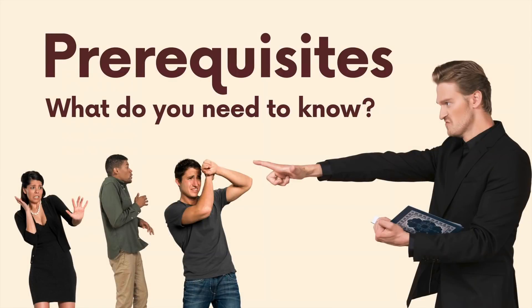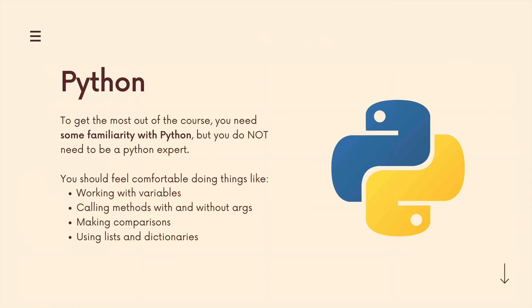I should talk about prerequisites. The good news is you need just a little bit of Python — you do not need to be an expert. 99% of what we do is just working with libraries and methods, calling methods, chaining them together, adding arguments in. There's really no complex Python program structures or syntactic structures. It's pretty simple stuff: variables, methods, conditionals — nothing crazy.